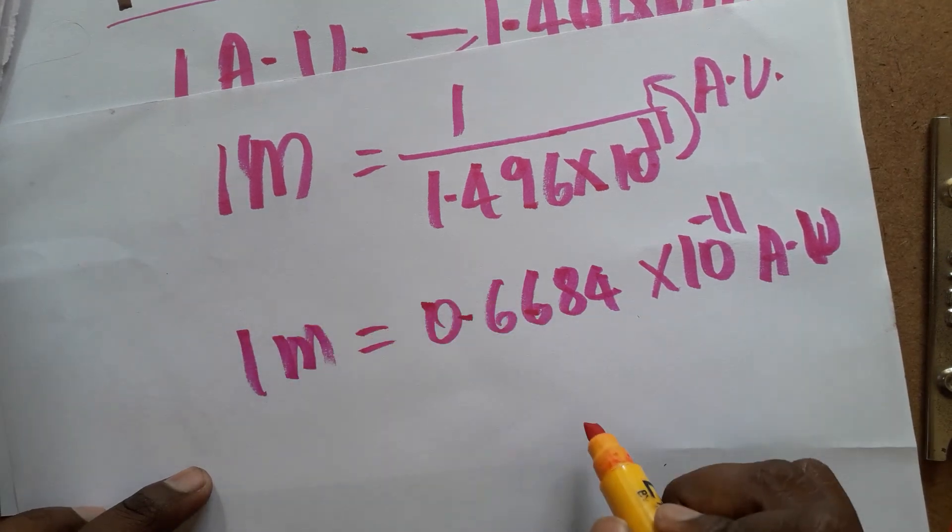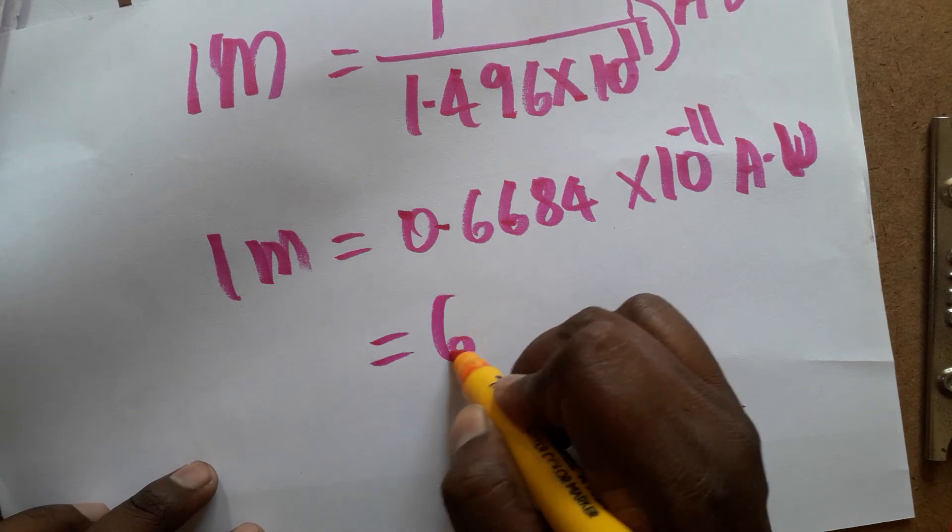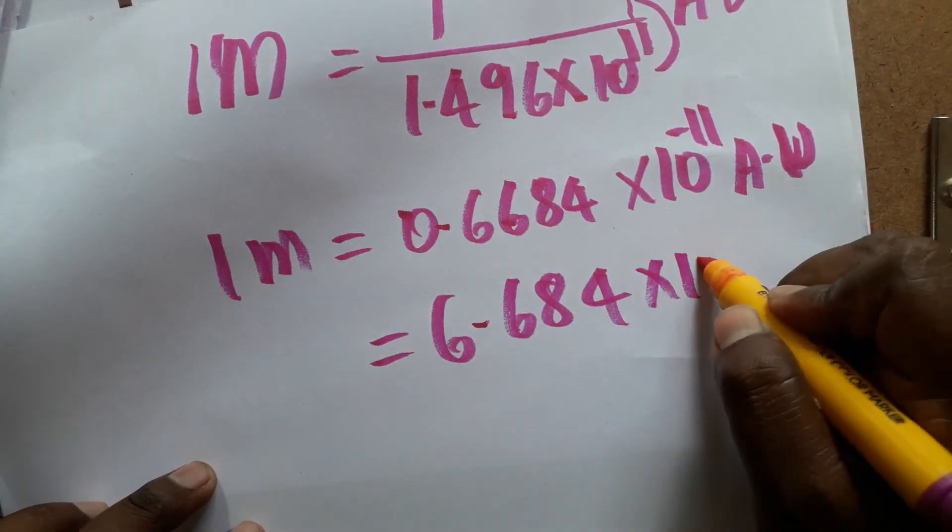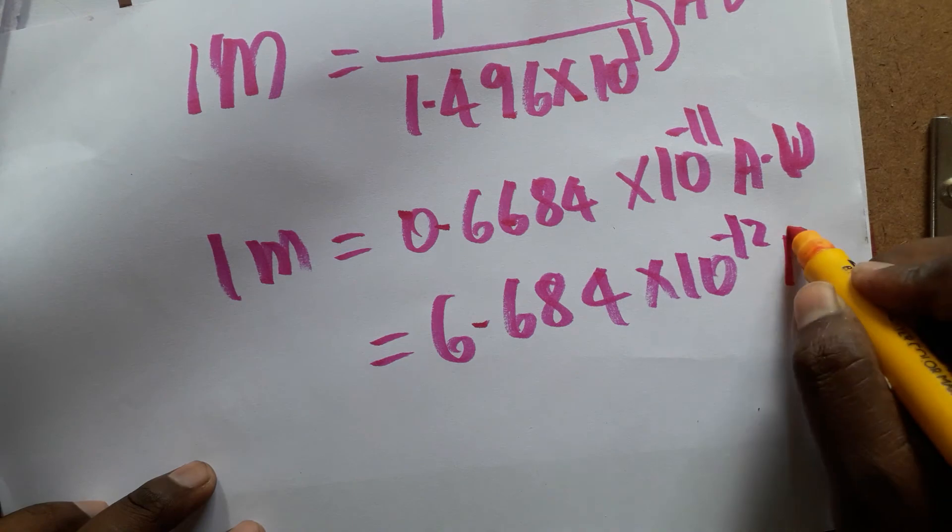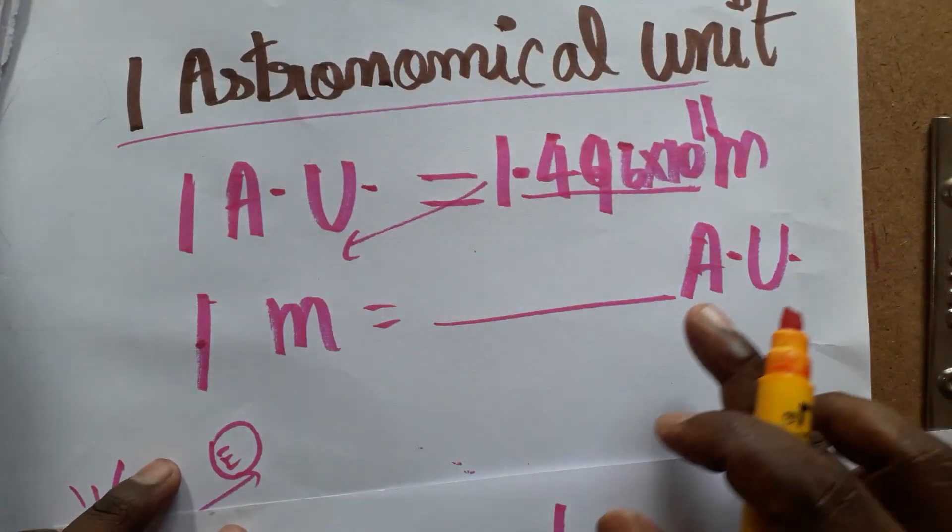So 1 meter is this many astronomical unit. If you want to write in a significant figure, 6.684 into 10 power minus 12 AU. So today in this video we learned 1 AU is this many meters.